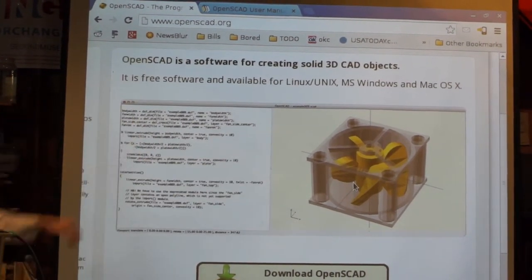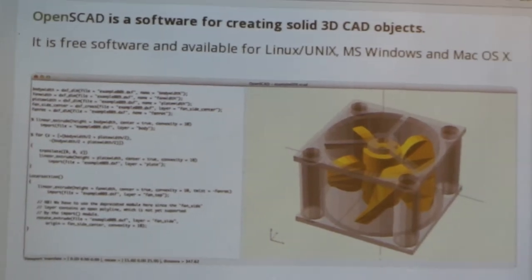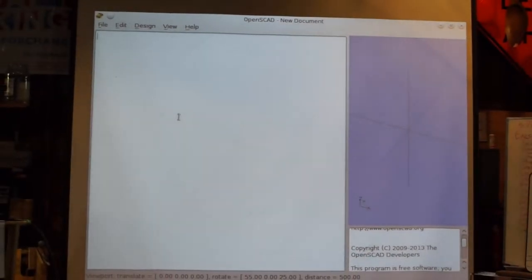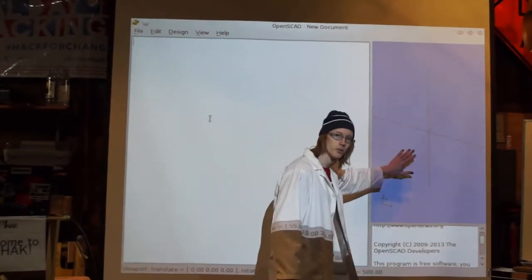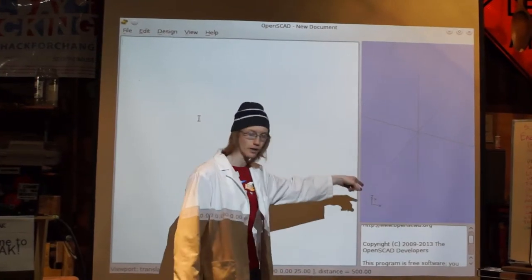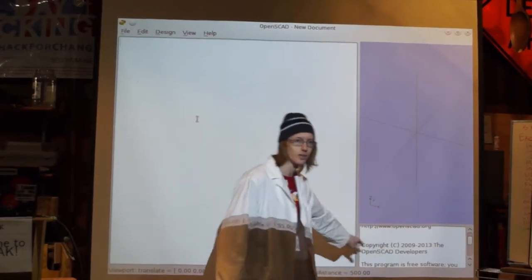You've got a big window on the side and another big window which is your 3D model. I have a full window here on my computer. It's got three panes. This is where you write your code. This is where you see what you wrote, and this is output telling you exactly why your code is wrong.